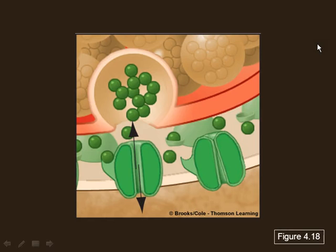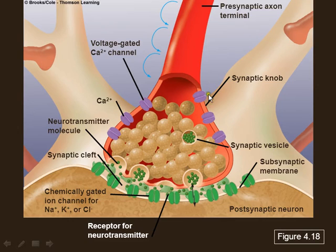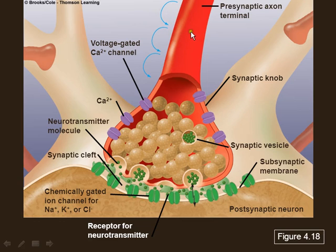So we were just talking about the synapse. As the action potential is going down the axon, the ion that's moving in to depolarize it is sodium. Sodium is going in, depolarizing that axon. Potassium is racing out behind it. Until you get down to the terminal or the bouton, the very end, then it's not sodium going in anymore.